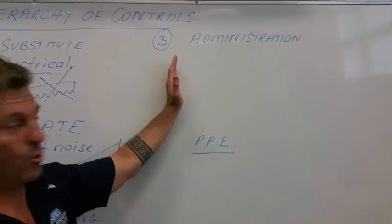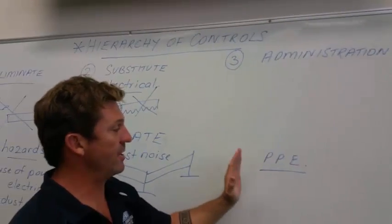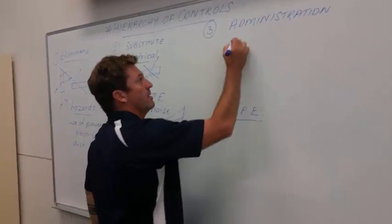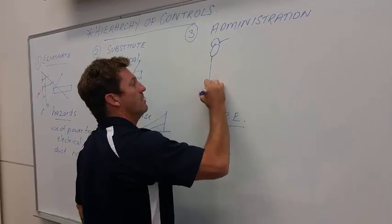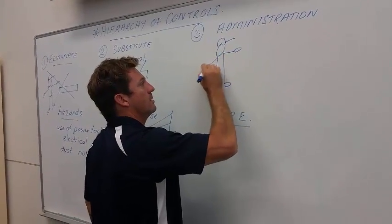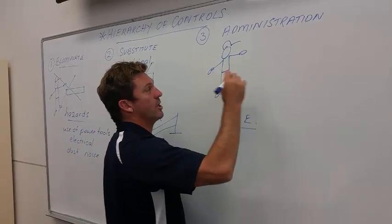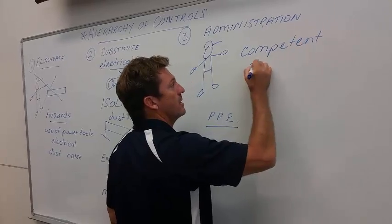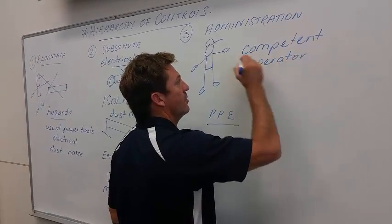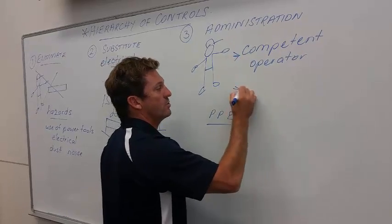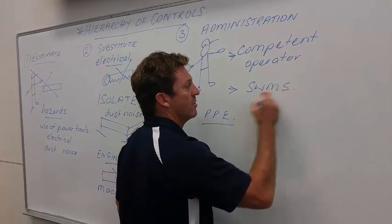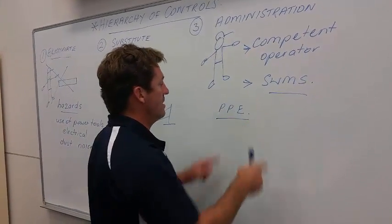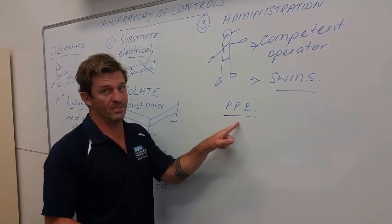To our last protocol, which is the administration part 3 and the personal protective equipment, we can use administration by ensuring that Joe has been trained as a competent operator, so we know that he can actually use that machinery or that power tool properly, that he's also been trained in the safety aspect of doing that job. And then lastly, when he does use it, he will have to wear personal protective equipment.